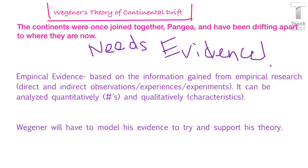Before we try and figure out how he went from Pangaea to what we're looking at now, let's look at his theory and the evidence that goes with it. Wegener's theory of continental drift is that all the continents were once joined together into a supercontinent called Pangaea, and that they've just been drifting farther and farther apart to where they are now.